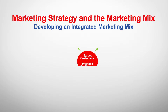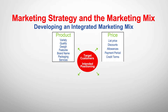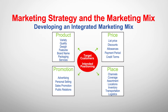When we talk about the first P — product — we discuss variety, quantity, design, quality, features, brand name, packaging, and services attached to the product. For price, we discuss the list price, discounts, allowances, payment period, and credit terms. For promotion, we talk about advertising, personal selling, sales promotion, and public relations. And finally, place — also expressed as location, logistics, or supply chain — covers channels, coverage, assortments, locations, inventory, transportation, and logistics.